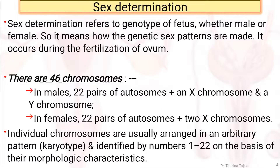Sex determination refers to the genotype of the fetus, whether male or female — how the genetic sex patterns are made. It occurs during the fertilization of the ovum. In the case of male, there are 46 chromosomes: 22 pairs of autosomes, an X chromosome, and a Y chromosome. In the case of female, 22 pairs of autosomes and two X chromosomes.